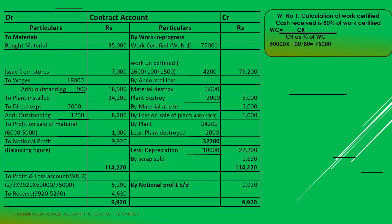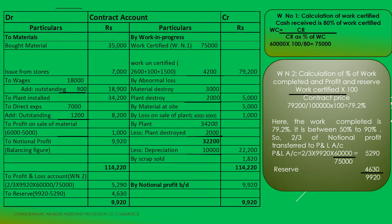Scrap sold Rs. 1,820 appears on the credit side of the contract account. There is an abnormal loss from point 3: material destroyed Rs. 3,000 and plant destroyed Rs. 2,000 — total Rs. 5,000 abnormal loss shown on the credit side.